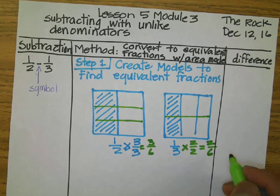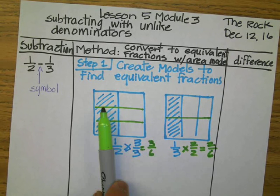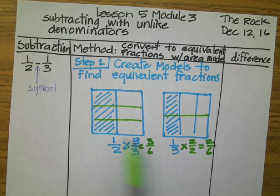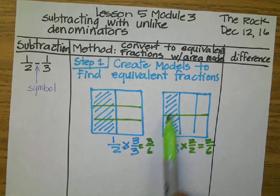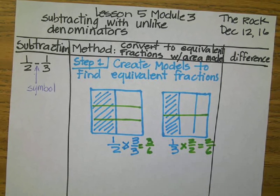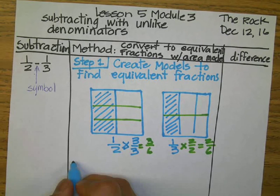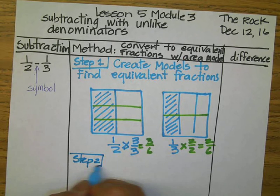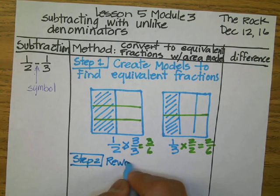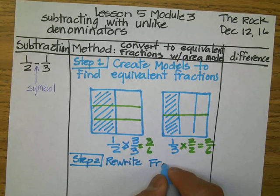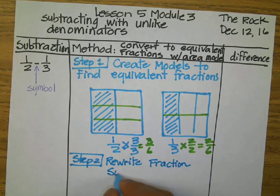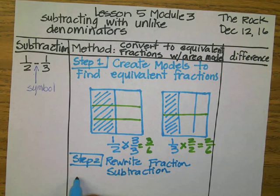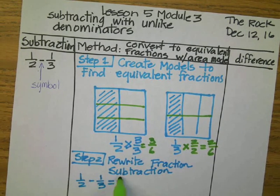Now we have like denominators, and our answer has to match with the model. We have six all together, and three are shaded — correct. We have six all together, and two are shaded — correct. So our next step is to rewrite the fraction. Our original subtraction was one-half minus one-third, which now is three-sixths minus two-sixths.